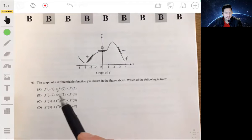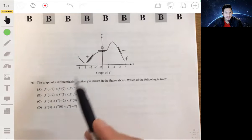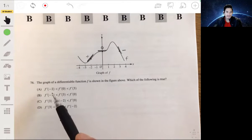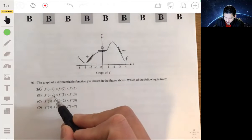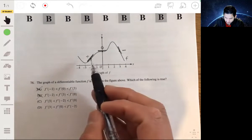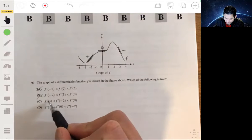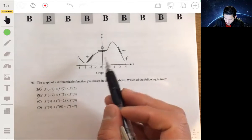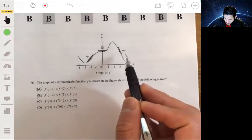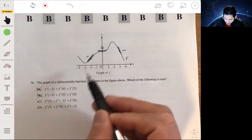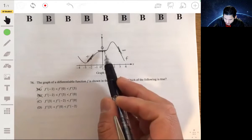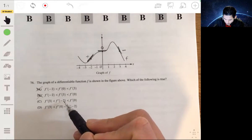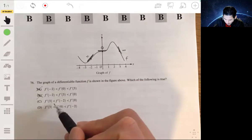Okay, so f prime of negative two is not going to be less than f prime of negative two. It's going to be the biggest, it's definitely not a. F prime of negative two is the largest of all these, but f prime of three is less than f prime of negative two, it is.